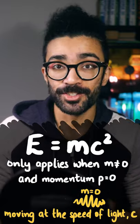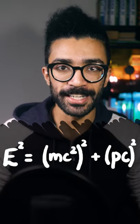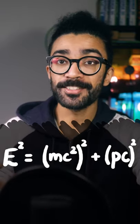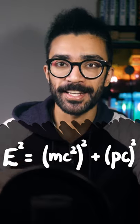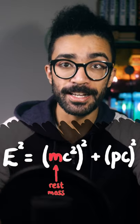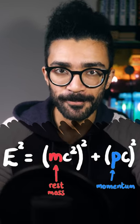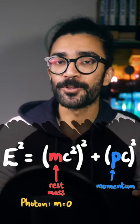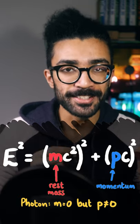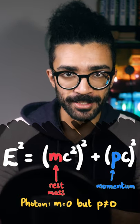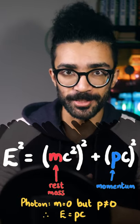The actual equation that we're looking for is this one here. This is the more general version for any object that has rest mass m and momentum p. A photon of course doesn't have any rest mass, but it does have momentum, and therefore its energy is not equal to zero.